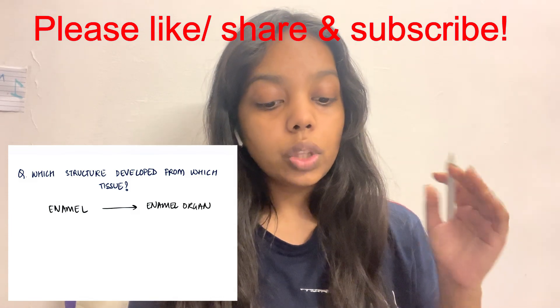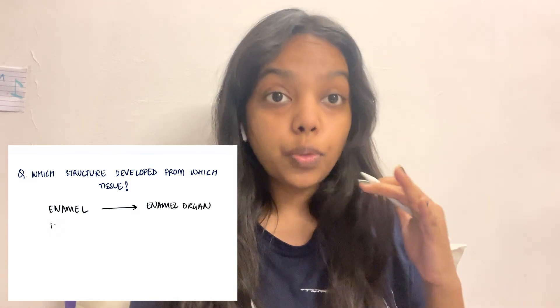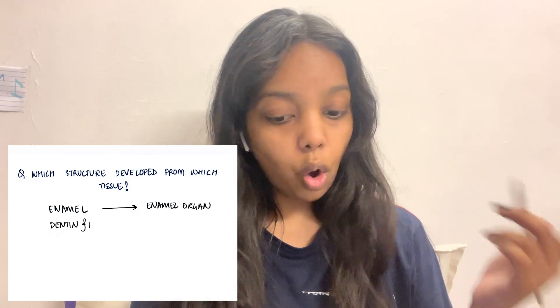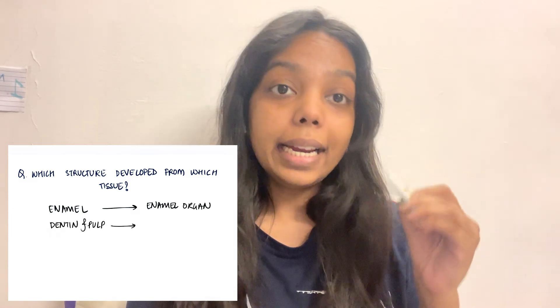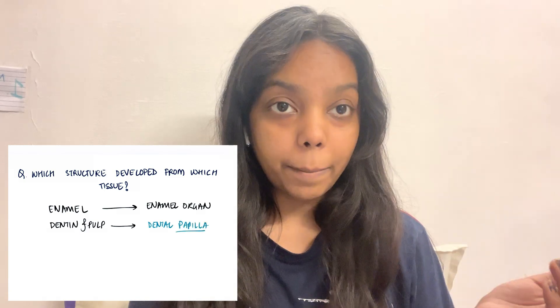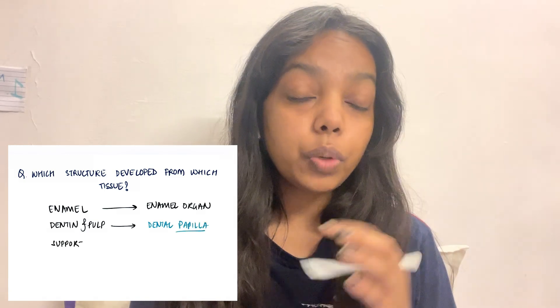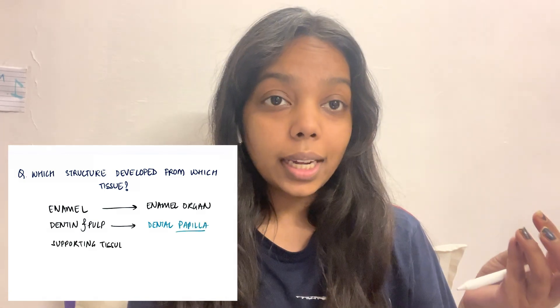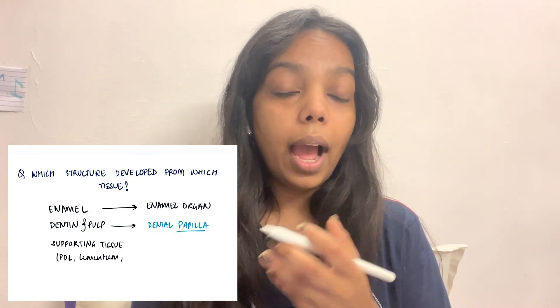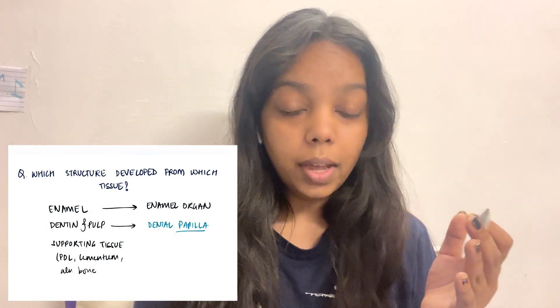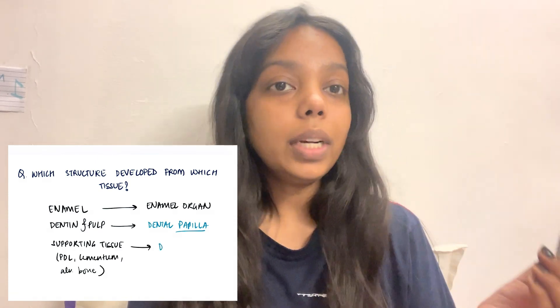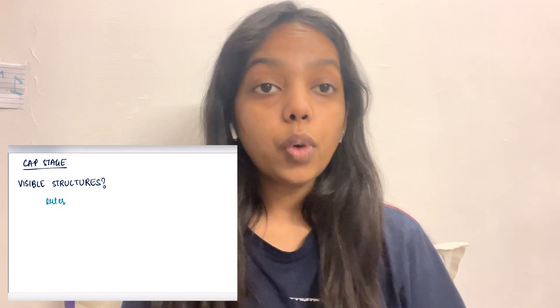The enamel is formed from the enamel organ. The dentine and pulp are developed from the dental papilla. The supporting tissues — which are the periodontal ligaments, the alveolar bone, and the cementum — are developed from the dental follicle. What are the structures visible in the cap stage?